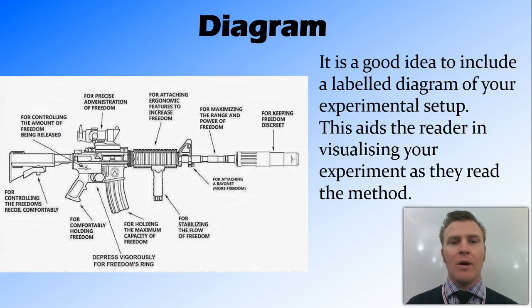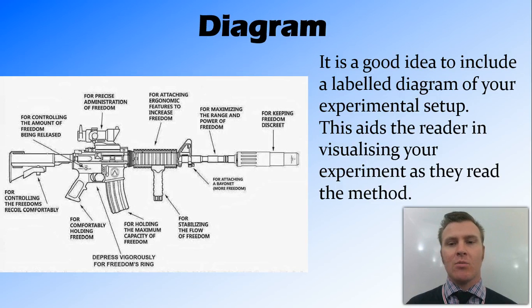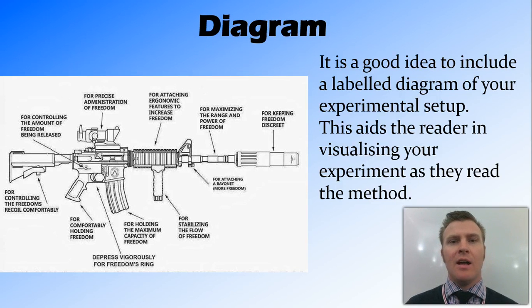It's always a good idea to include a labelled diagram of the experimental setup. As they say, a picture paints a thousand words, and this aids the reader in visualising your experiment and how you go about your experiment while they're reading the method.